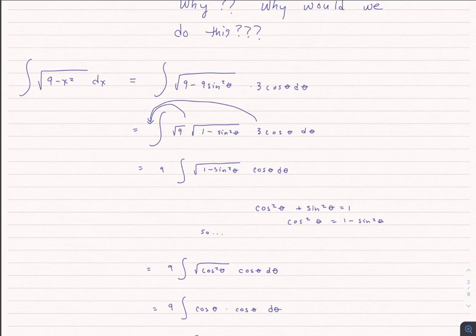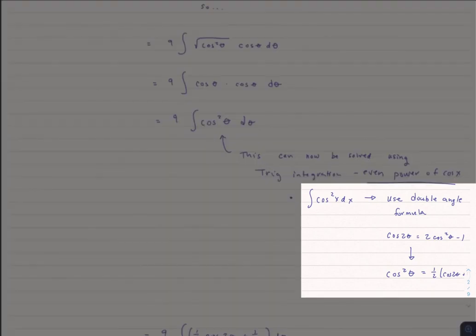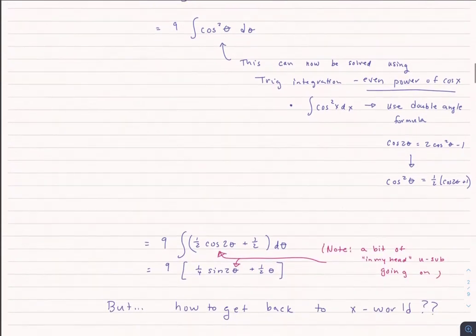So I'm left with 9 times the integral of cosine squared theta. This is one of those trig integrals we've talked about before. We use the double angle formula: cosine of 2 theta equals 2 cosine squared theta minus 1. Solving for cosine squared theta gives us one-half times (cosine 2 theta plus 1). Plugging that back in and integrating, the integral of one-half cosine of 2 theta ends up being one-half times one-half times sine of 2 theta. You can work that out with a u-substitution if needed.